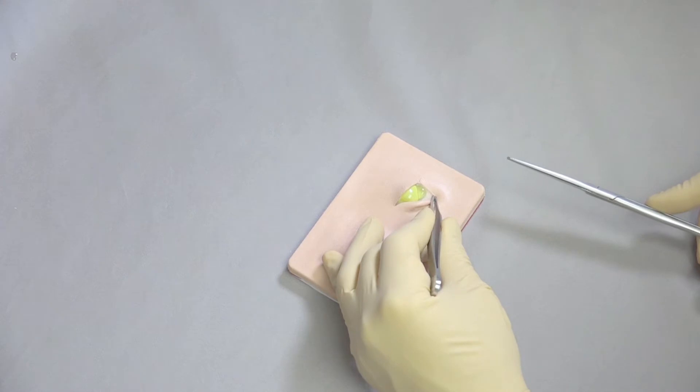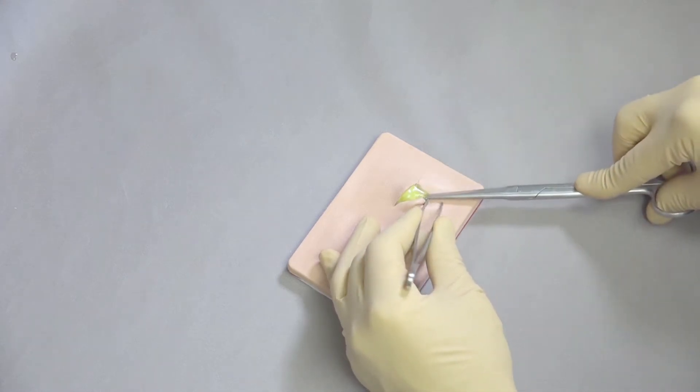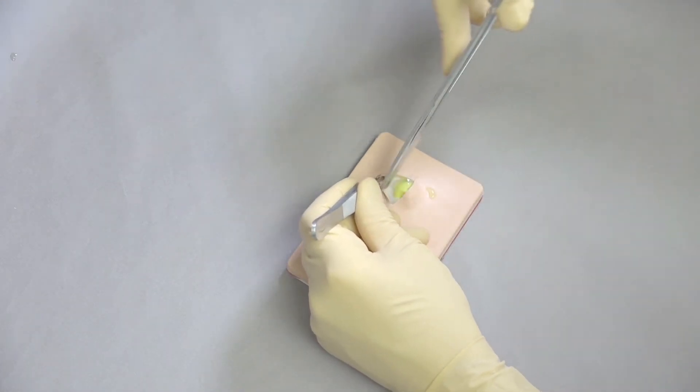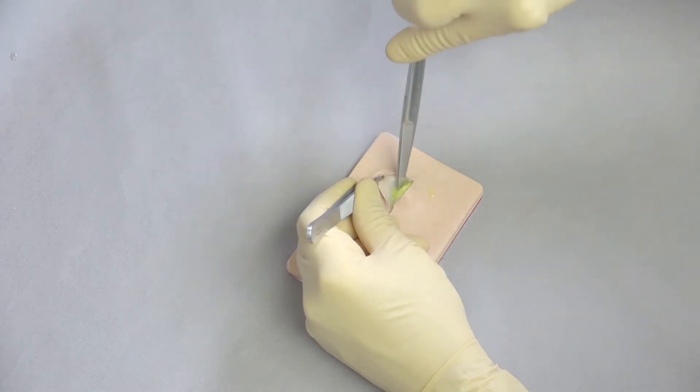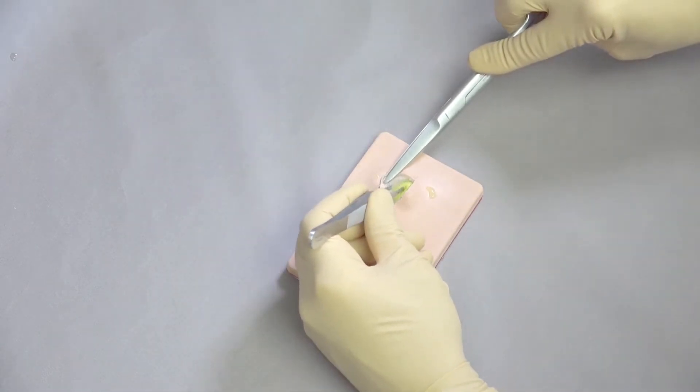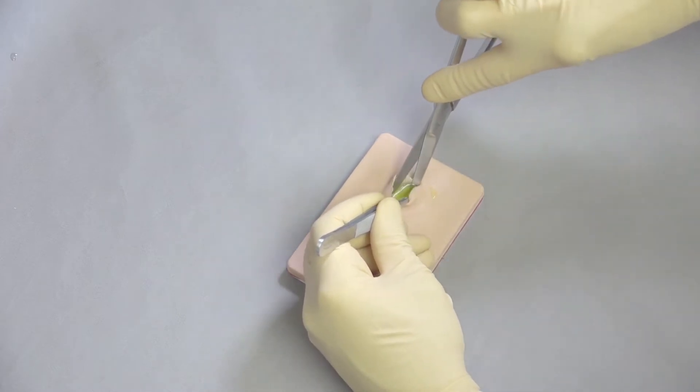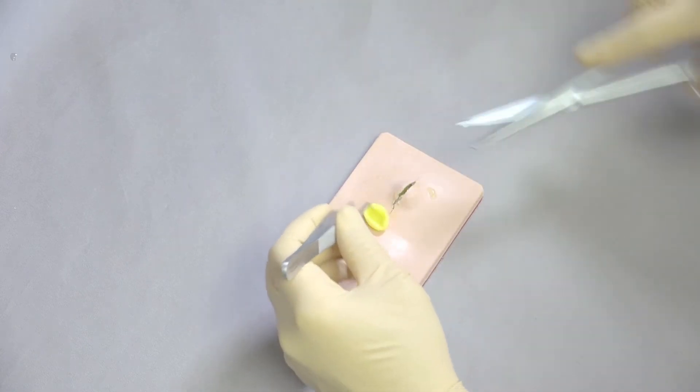And now we've got cyst leakage. So it's not the worst thing in the world. It's going to happen in many cysts. At that point we can become a little bit more aggressive and work our way around and slowly dissect the cyst off until we can remove the cyst and move on to the next procedure.